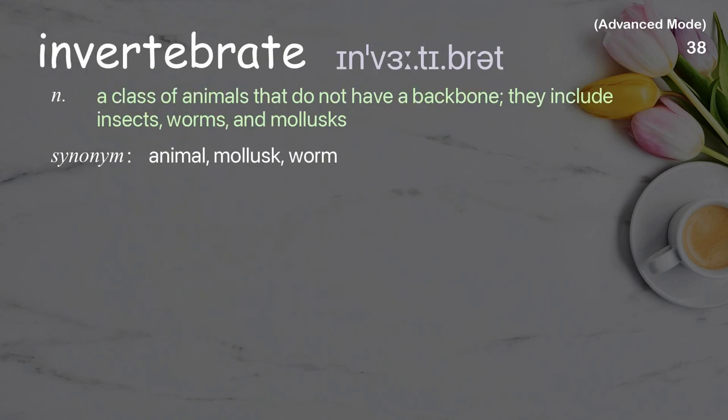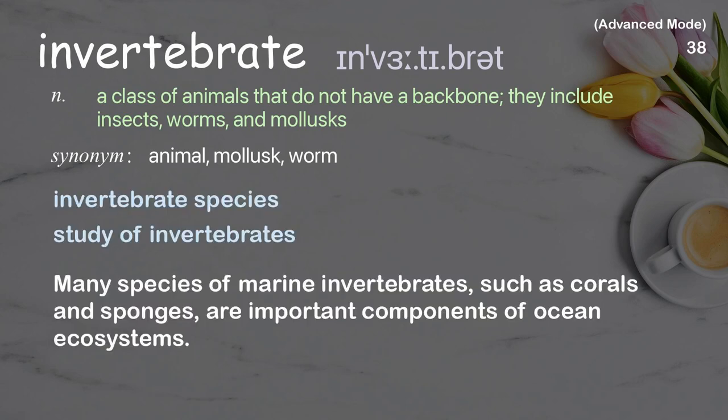Invertebrate: A class of animals that do not have a backbone; they include insects, worms, and mollusks. Examples: invertebrate species, study of invertebrates. Many species of marine invertebrates, such as corals and sponges, are important components of ocean ecosystems.